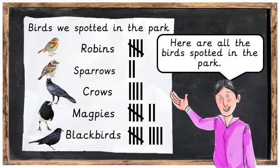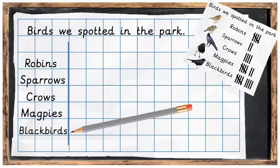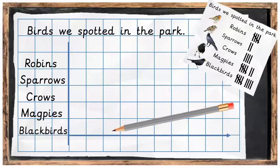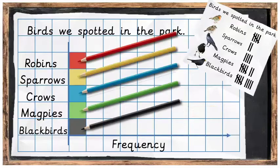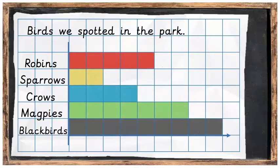For a quick recap, here are all the birds spotted in the park one day. This data was put into a block graph starting with the data group, which was the birds. We put in the names of the birds that were spotted. Then along the bottom, a line was put in to show the frequency, or how often the birds were spotted. The block graph was then coloured in, with each block filled in representing one of each of the birds that was spotted, which then turned out to look like this.